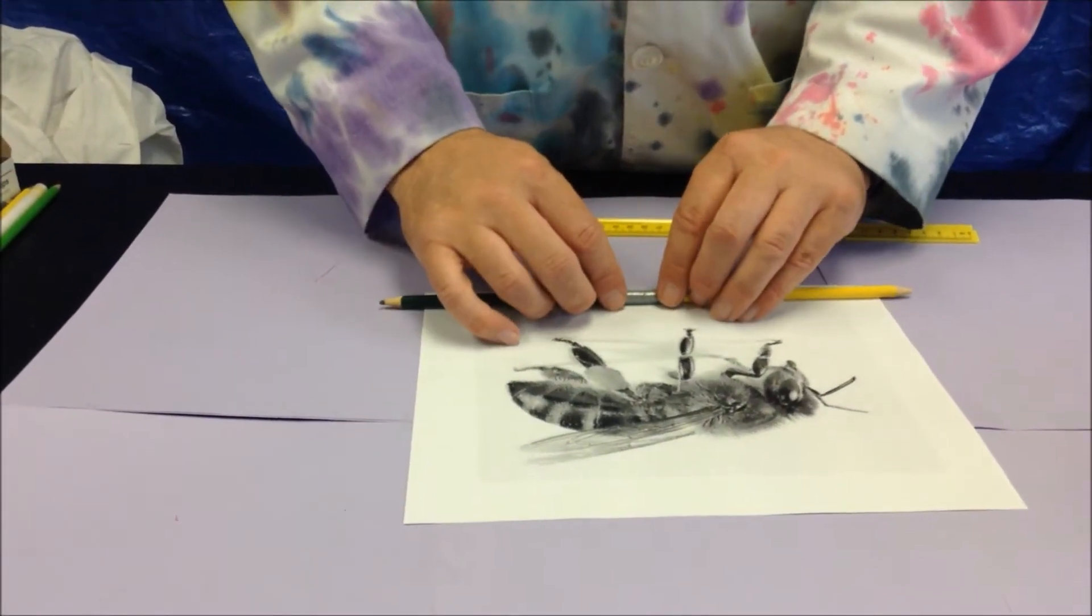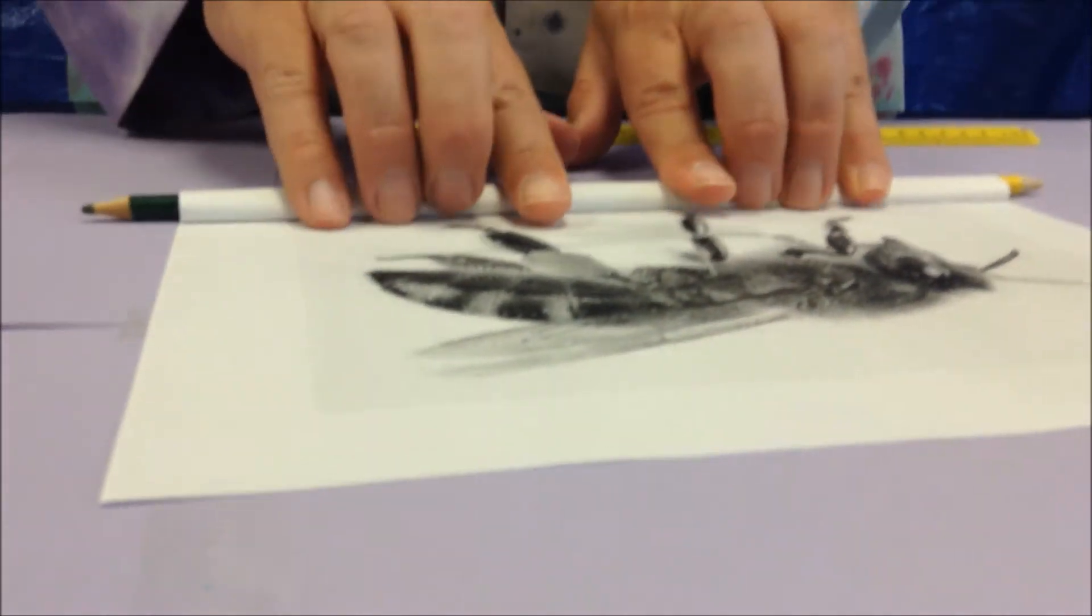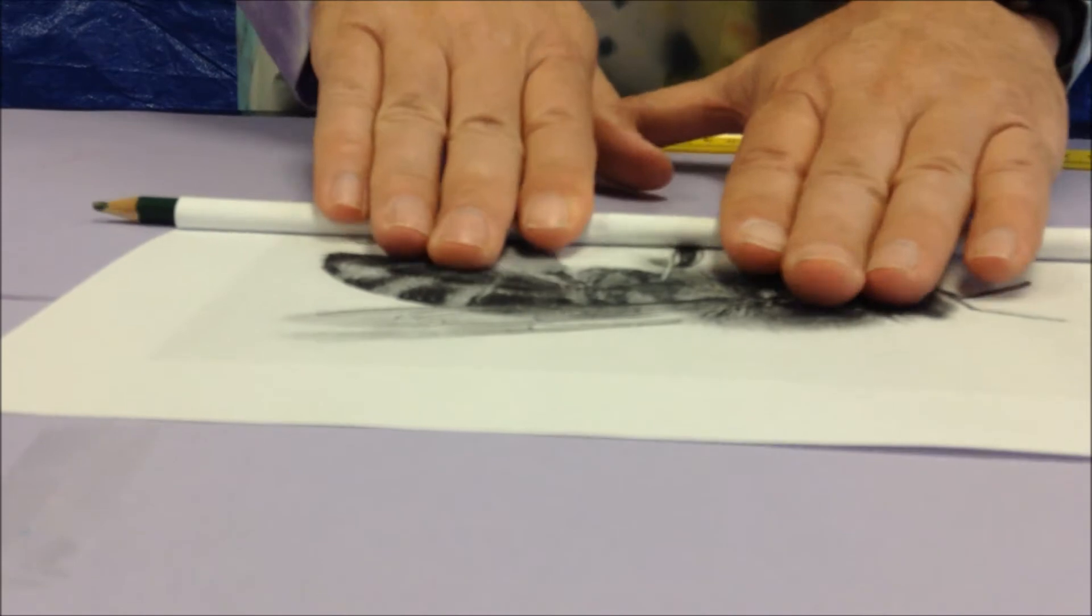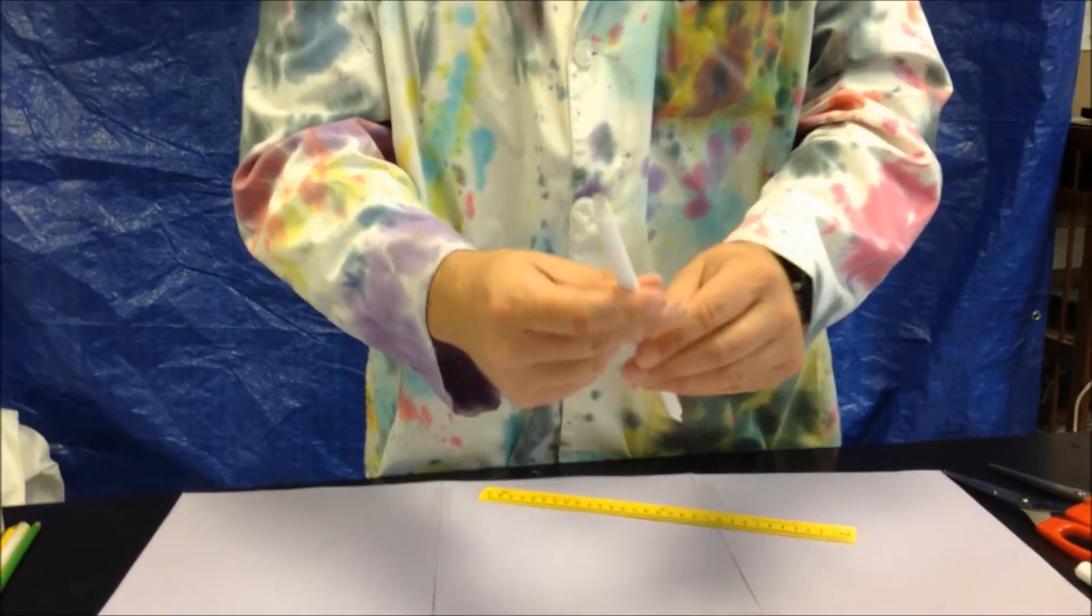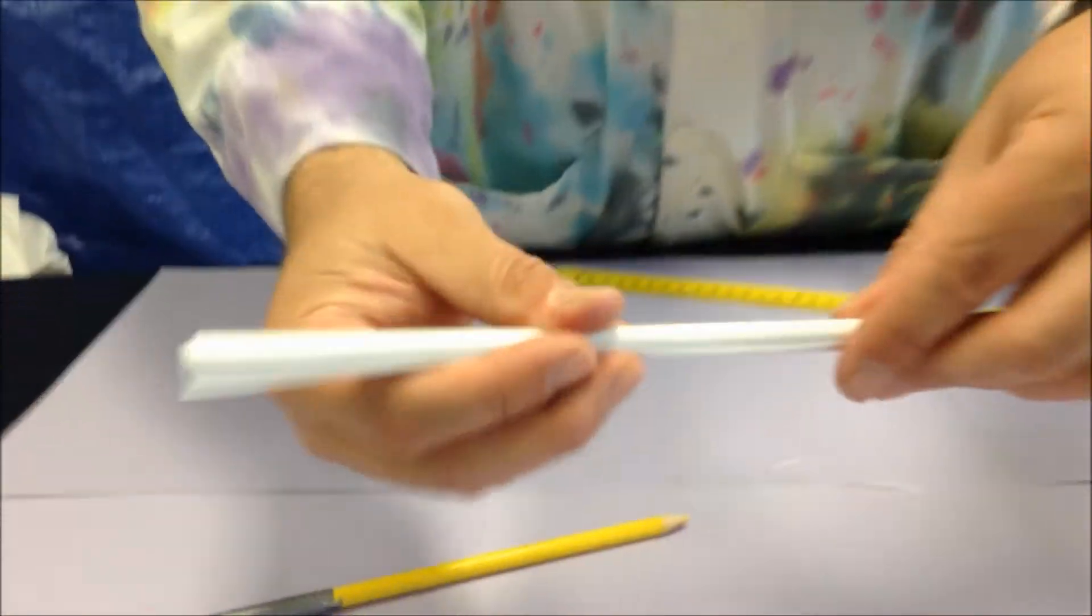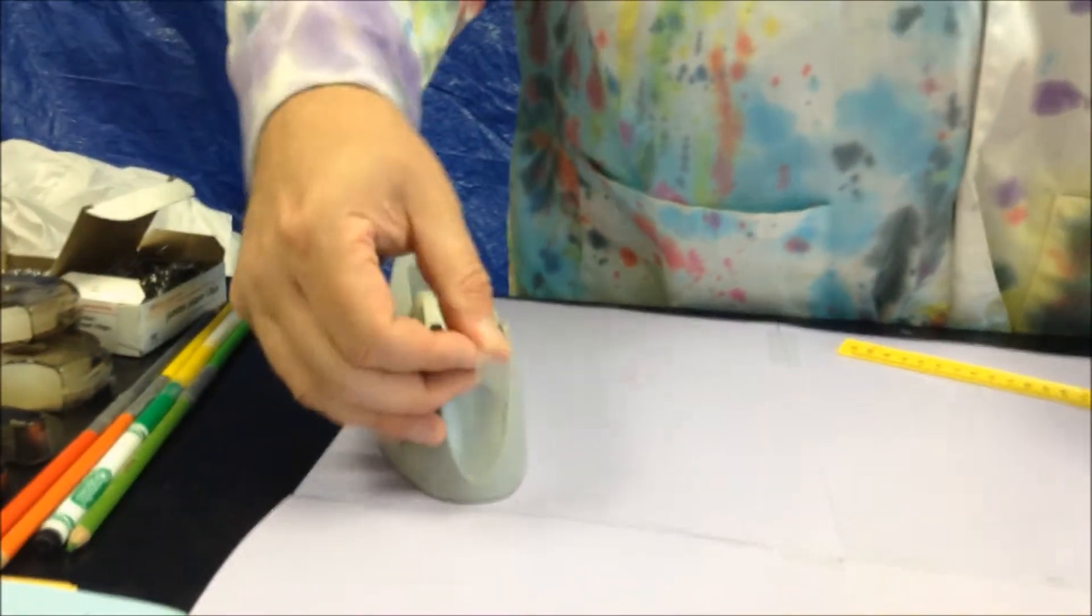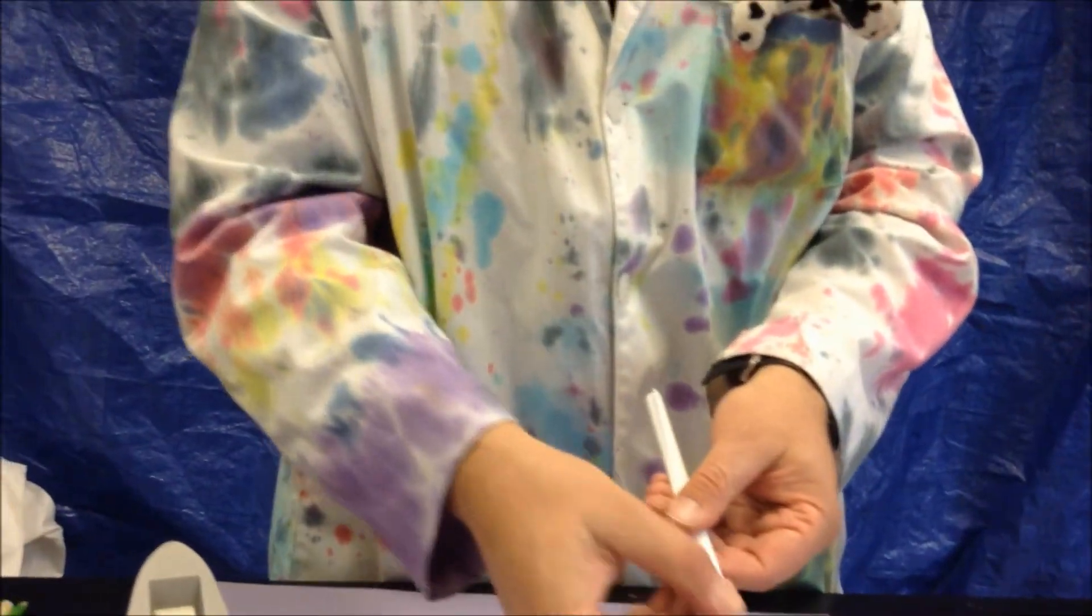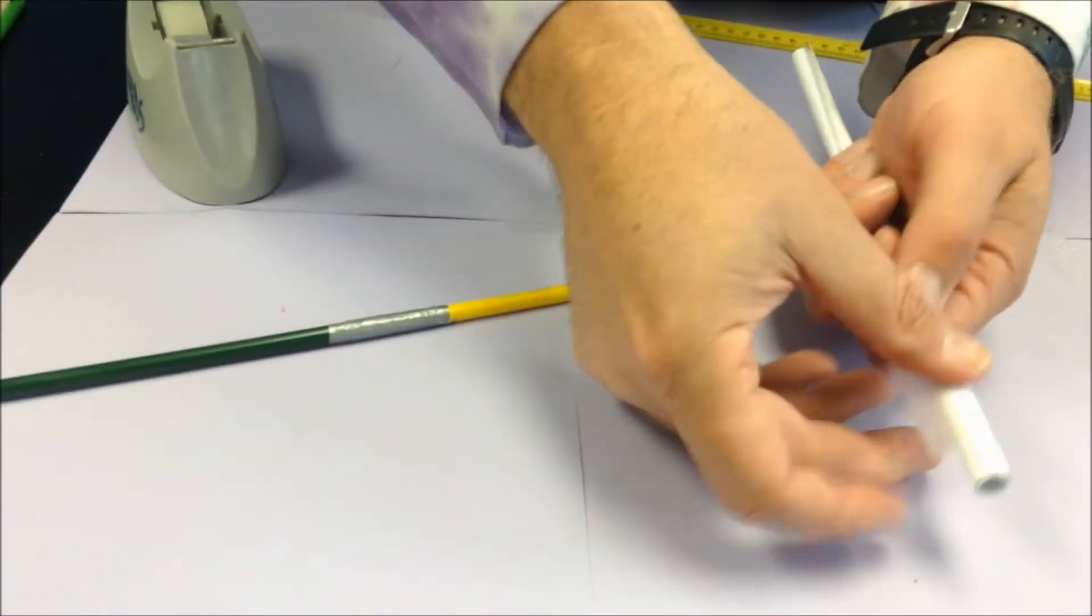Roll it until you get a nice tight body tube. You want to make sure that the body tube is very strong because there's gonna be a lot of force that's gonna be put on this body tube. Get some tape, tape it a few times. Quick and easy, you are done with the body tube.